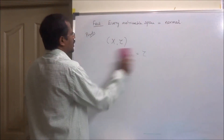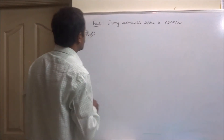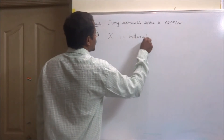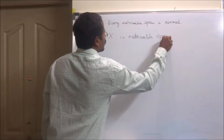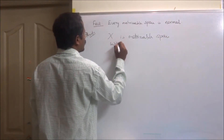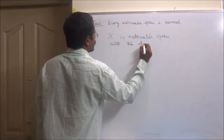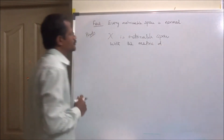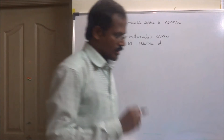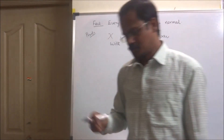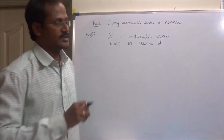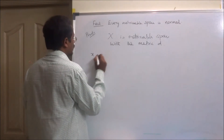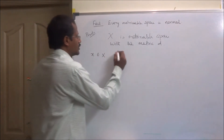Consider such a metrizable space X — that is, X is a metrizable space with a metric d on X. To prove that X is normal, we work on the first condition: every singleton set that is closed in X is also closed in the metric. You start with an arbitrary point x in X and consider the singleton {x}.